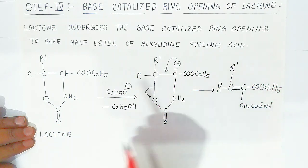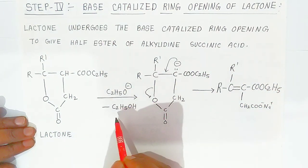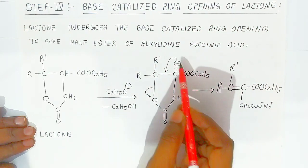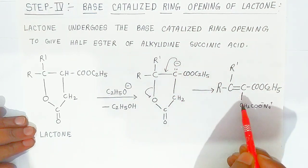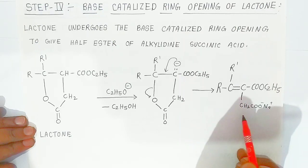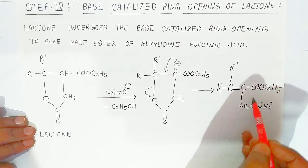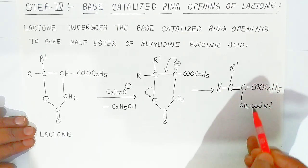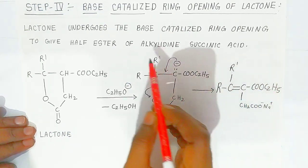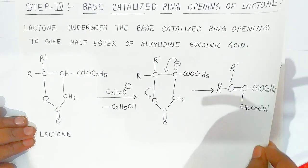In the fourth step, the lactone undergoes base-catalyzed ring opening to give the half ester of alkylidene succinic acid. In presence of base, ethanol is eliminated and, after resonance, the unsaturated acid — called alkylidene succinic acid — is formed as the sodium salt. Upon hydrolysis, the alkylidene succinic acid is obtained.